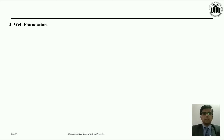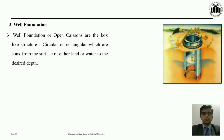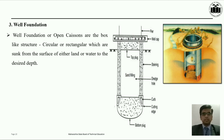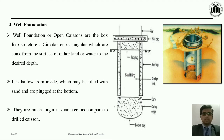The third type of deep foundation is well foundation. A well foundation, also called an open caisson, is a box-like structure, circular or rectangular, which is sunk from the surface of either land or water to some desired depth. Such kind of well foundations are hollow from inside, which may be filled with sand, and are plugged at the bottom. They are much larger in diameter as compared to drilled caissons. Well foundation can be used as a foundation for bridges in water bodies.